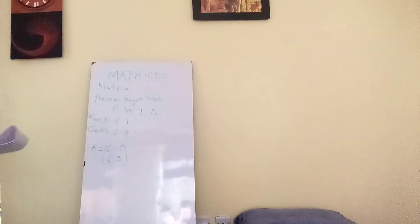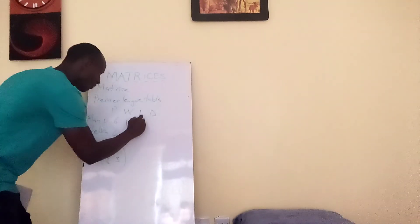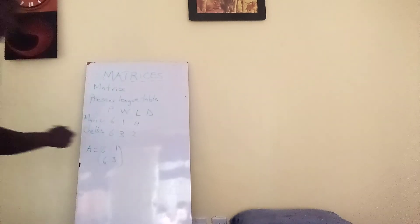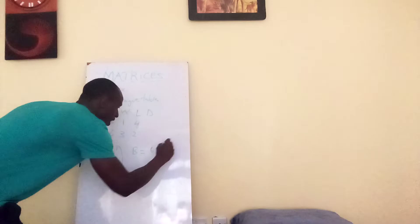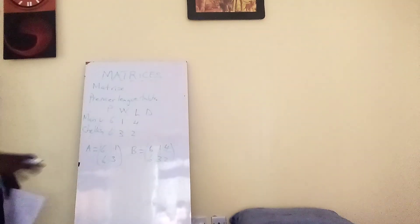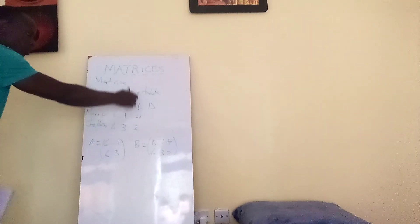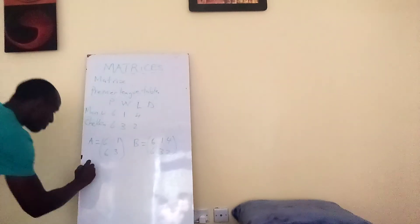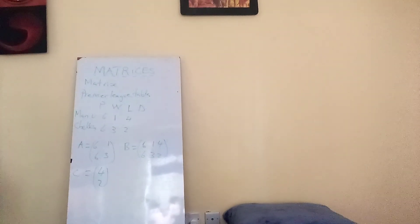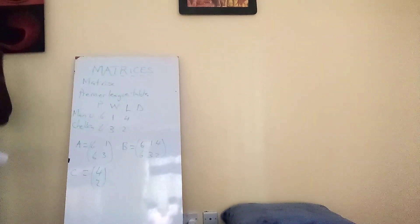We can also add the games which they have lost. Let's say Manchester United lost four games and Chelsea lost two games. We can create another matrix B, taking all the numbers: 6, 1, 4, 6, 3, 2, closed with brackets. We can also take just the games lost for both teams and call that matrix C, which will be 4, 2. So those are three types of matrix obtained from the Premier League table standings of Manchester United and Chelsea.